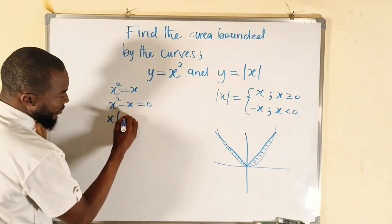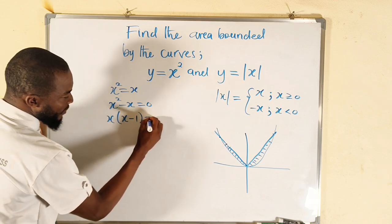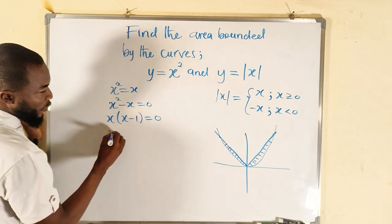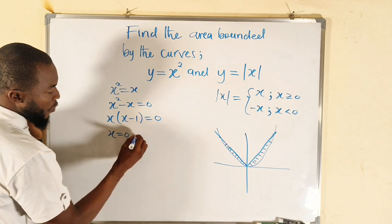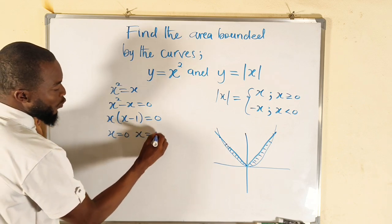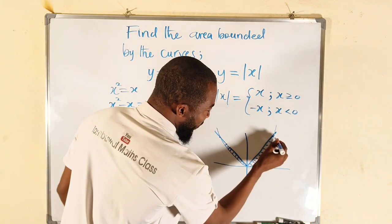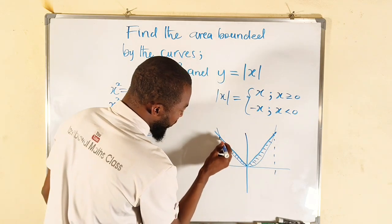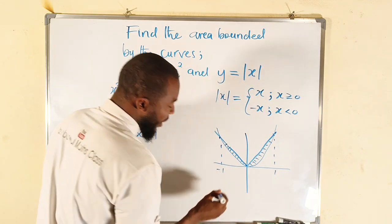You can factor out x. You have x(x - 1) = 0. So x could be zero or x = 1.